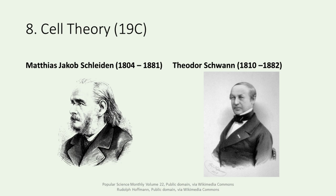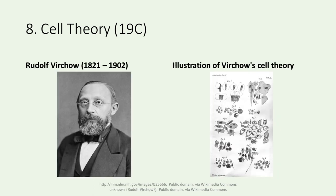In the 19th century, scientists like Schleiden, Schwann, and Virchow contributed to the formulation of cell theory. Schleiden argued for the plant-cell theory that plants are made up of cells after observing each part of the plant under a microscope, and Schwann argued for the animal-cell theory that animals, like plants, are made up of cells. Virchow argued that all cells come from cells and established the cell theory. The cell theory revealed that the basic unit of all living organisms is the cell, which promoted research on cells. The image on the right is an illustration of Virchow's cell theory.